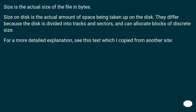Size is the actual size of the file in bytes. Size on disk is the actual amount of space being taken up on the disk. They differ because the disk is divided into tracks and sectors and can allocate blocks of discrete size.